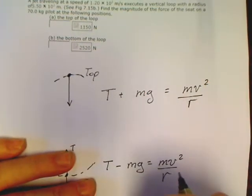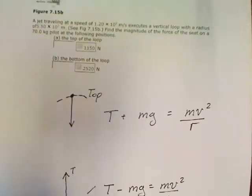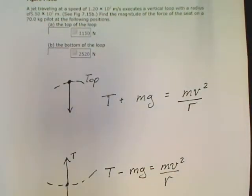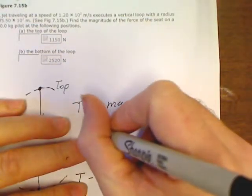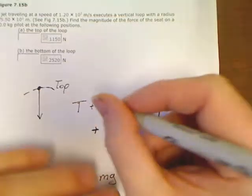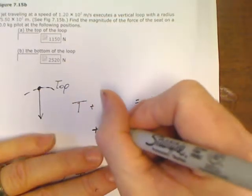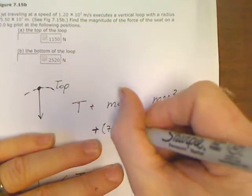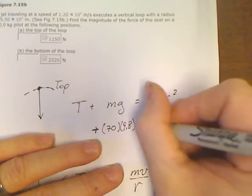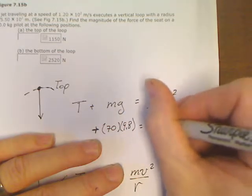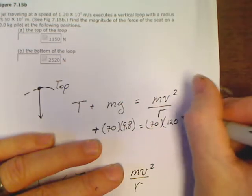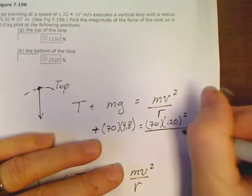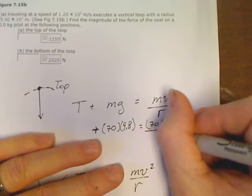It gave me everything you need. The physics is over. It's done. This problem is just plugging in the numbers at this point. So this ends up being, let's see, plus for the top. I will work the problem, but you can do this one without me for sure. 70 times 9.8 equals 70 times v squared, 120 squared over 550.